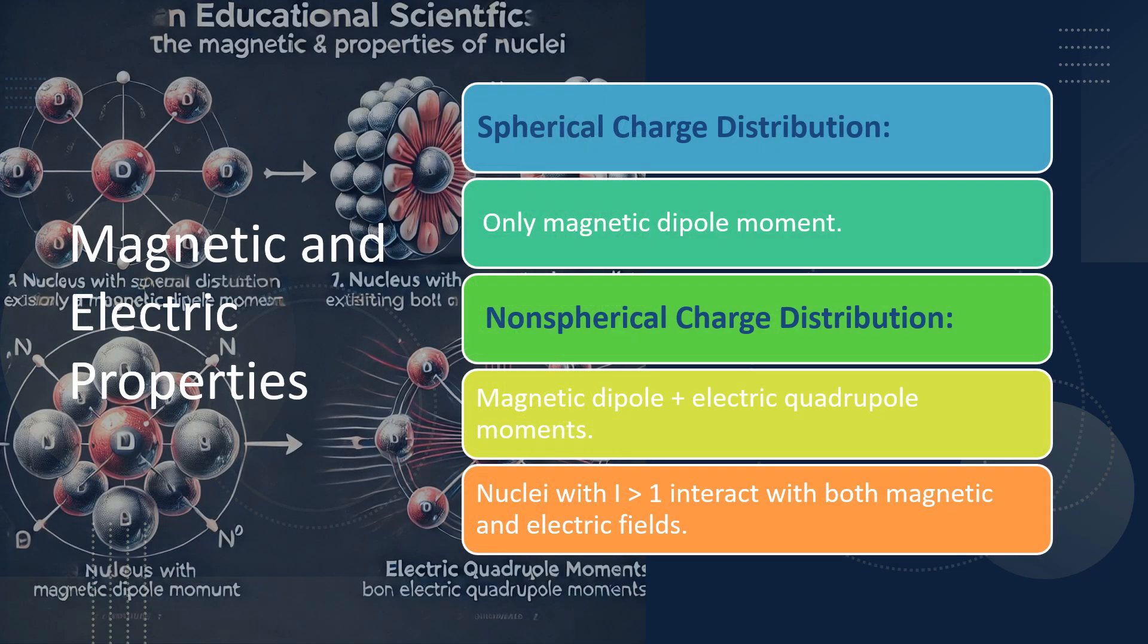Nuclei are not just magnets—they also have electric properties. The distribution of charge within the nucleus affects how it interacts with its surroundings. Some nuclei have spherical charge distributions, while others are more elongated, like a football. These differences impact how they behave in both magnetic and electric fields, which is crucial for understanding advanced techniques like nuclear quadrupole resonance (NQR).